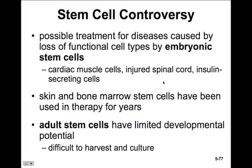Adult stem cells have very limited developmental potential and are difficult to harvest in culture, but that's all we can use right now until issues with embryonic stem cells are resolved. Interestingly, some people most opposed to embryonic stem cell use are those using in vitro fertilization who are willing to discard unused embryos, yet unwilling to use the stem cells from those embryos to treat disease — even in their own family. That concludes our chapter on histology. Have fun with your project, and we'll see you for the integumentary system.